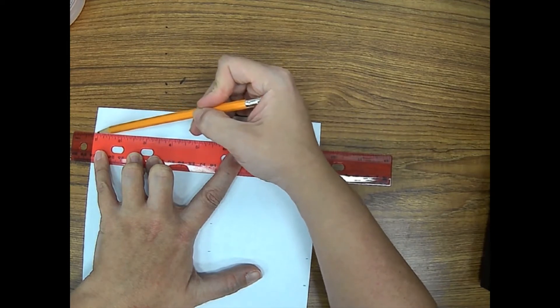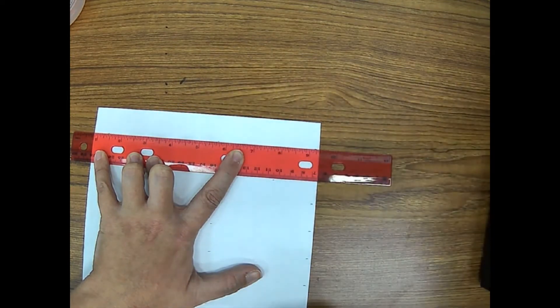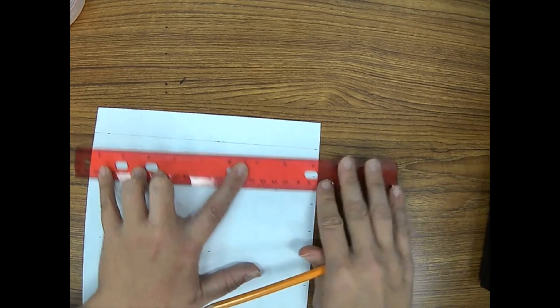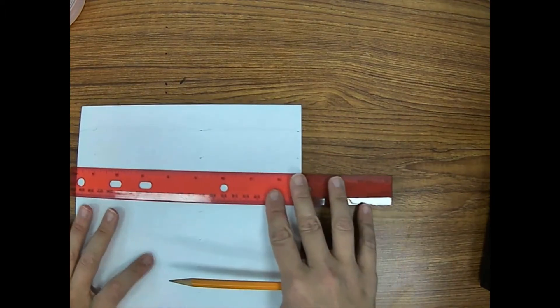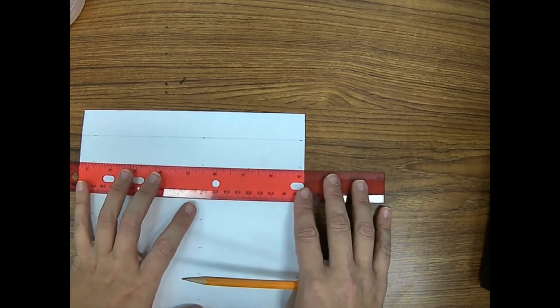And then very lightly, not pushing hard at all, pushing very lightly, we're just going to make a line. And it's a very light line because we have to erase every single one of these lines that we make in the end.